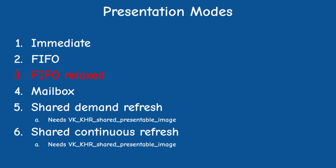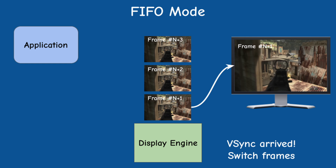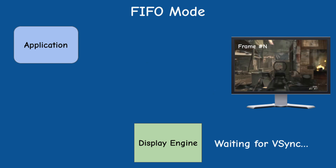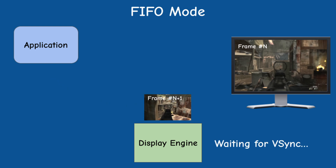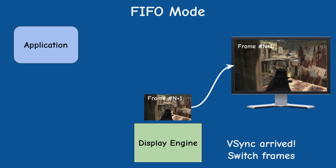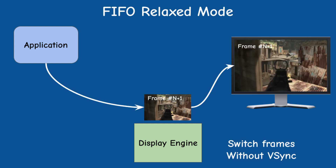The next mode is called FIFO Relaxed. It is based on FIFO with a small twist regarding switching frames on the display. In regular FIFO the display waits for the vsync and then grabs the next image from the top of the queue. But if the application is late and there is no image, we have to wait for the next vsync for a second chance at getting an image. In FIFO Relaxed, we allow any image that arrives into an empty queue to be delivered to the display without waiting for the vsync. This of course may result in tearing, so bear this in mind.